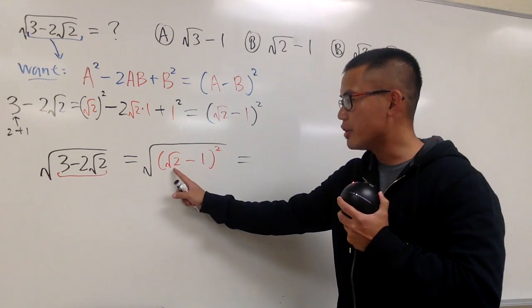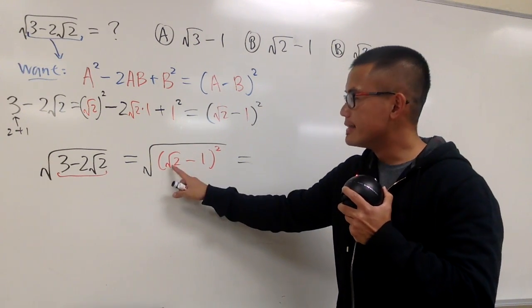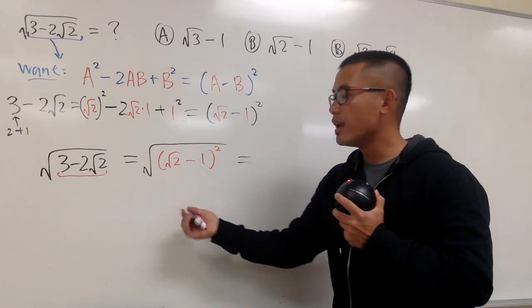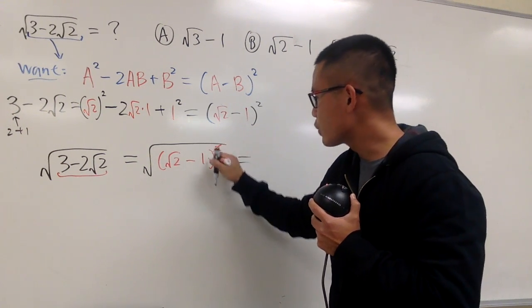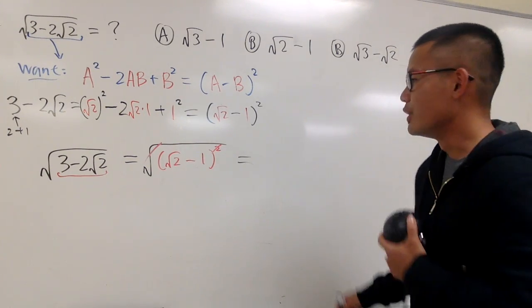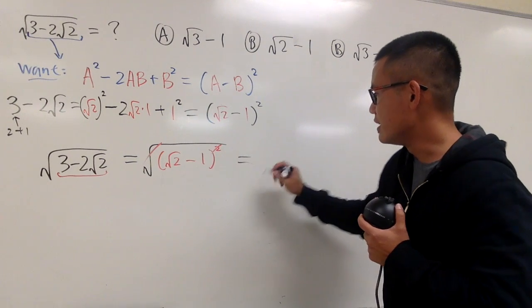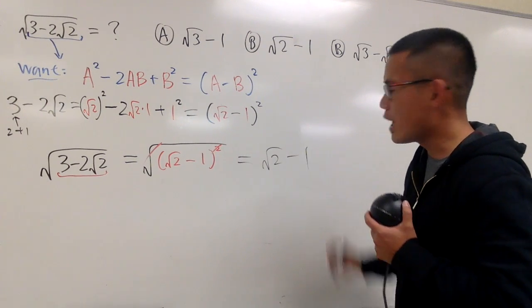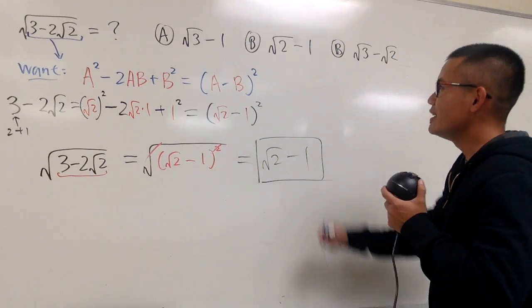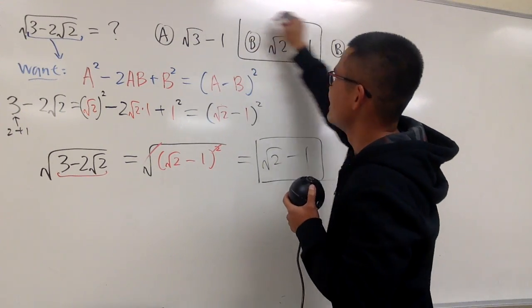Because the inside here, we have √2 minus 1. √2 is bigger than 1, so that means this is positive. That means when you cancel the square and the square root, it's positive. You don't need the absolute value, you don't need a negative anymore. So you just have what this is, √2 minus 1. That's it. This is the result. Namely, we will have choice b for that.